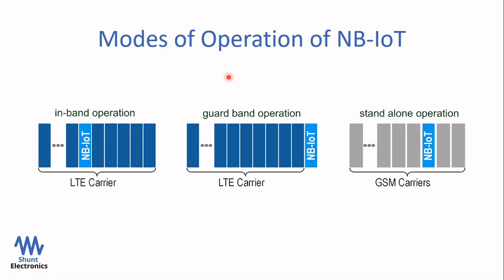First is in-band operation: NB-IoT uses the frequency spectrum of an LTE channel. Second is guard band operation: LTE channels have a guard band between channels to reduce interference, and these guard bands have enough bandwidth to accommodate an NB-IoT channel — as we can see in this diagram. In standalone mode, NB-IoT occupies channels which were previously occupied by GSM, taking over the complete GSM carrier channel.